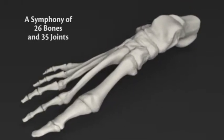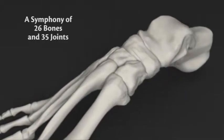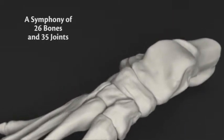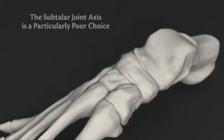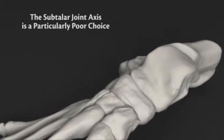No singular axis can describe the symphony of motions that comprise the postural change that occurs in the foot. And in fact, if you were forced to choose one axis, the subtalar joint axis is a particularly poor choice.